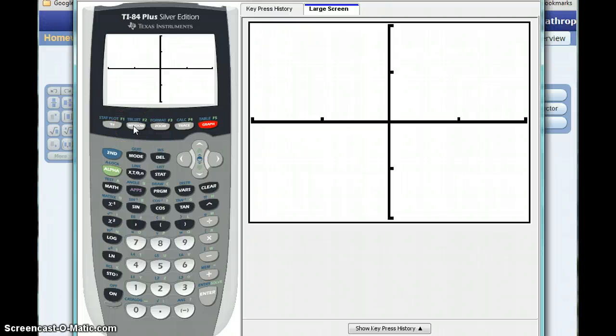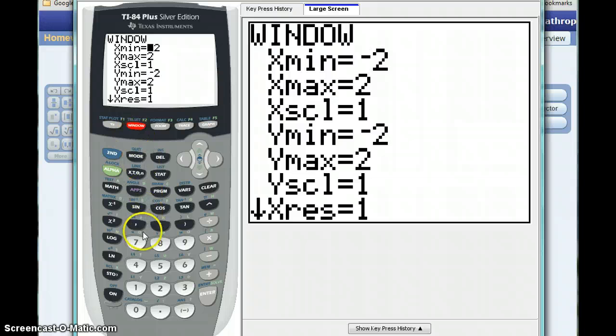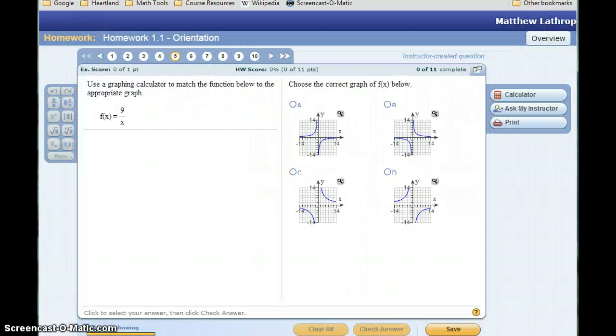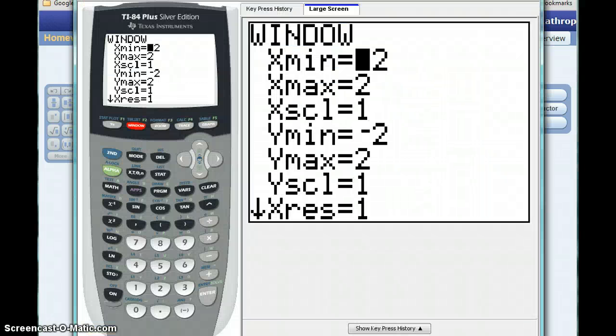In order to change the window settings, we want to click on the window button. Take a look back at our graphs that were given. In this case we can see that the domain for each graph is from negative 14 to 14. So our x values are going from negative 14 to 14. We can change our x min value and our x max value to match those.